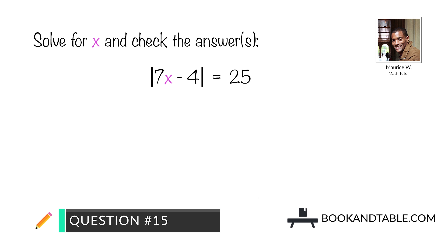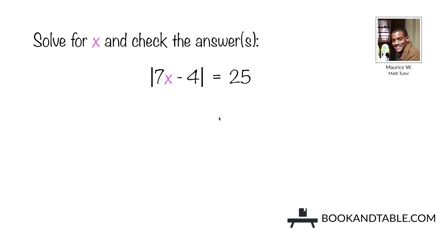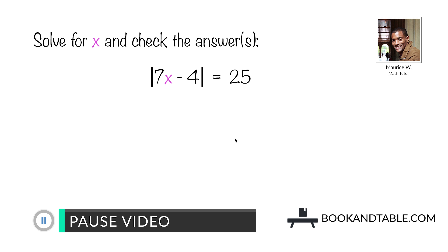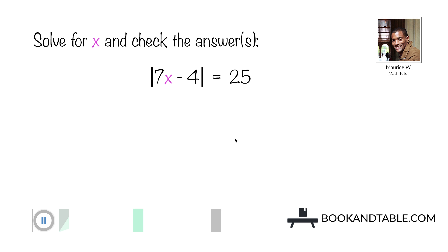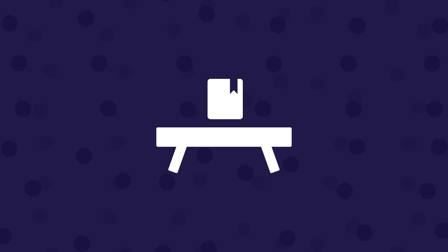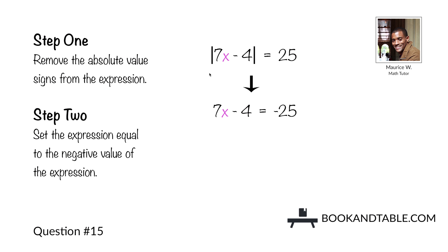Question number fifteen: solve for x and check the answers. The absolute value of 7x minus 4 is equal to 25. Step one: remove the absolute value signs, leaving you with 7x minus 4. Step two: solve for the possible negative value, which is negative 25. Step three: solve for x — remove the constant negative 4 by adding 4 to both sides, leaving us with 7x on one side and negative 25 plus 4, which is negative 21, on the other side.